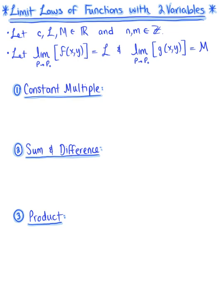These two linear function rules are very similar to evaluating single variable functions. The following are more generalized limit laws for functions of two variables, and again we will see similarities to single variable calculus. We let c, L, and M be any real numbers, and we let n and m be integers. We also let the limit as p approaches p₀ of f equal L, and the limit as p approaches p₀ of g(x, y) equal M.